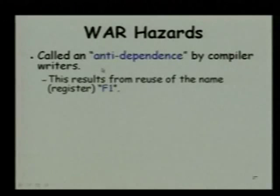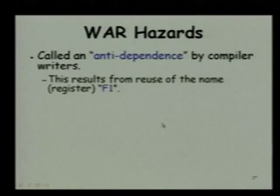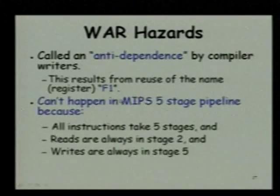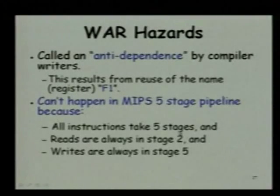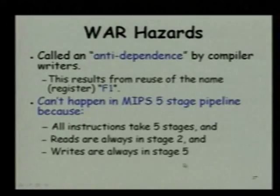Now let us look at the write after read hazard. Instruction j is producing F1 and instruction i is reading F1. Since in an in-order pipeline we guarantee that i will complete first — including its reading — before j produces its result, this kind of hazard cannot occur in an in-order pipeline. The write after read hazard is caused by anti-dependence. It is a type of name dependency because this results from reuse of the name F1. In a MIPS 5-stage pipeline, all instructions take 5 stages — reads are always in stage 2 and writes are always in stage 5.